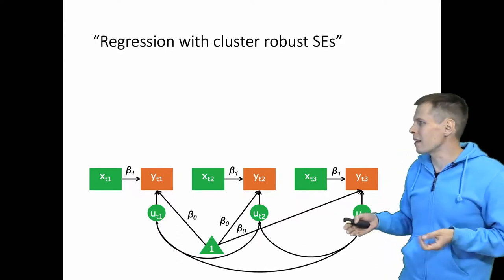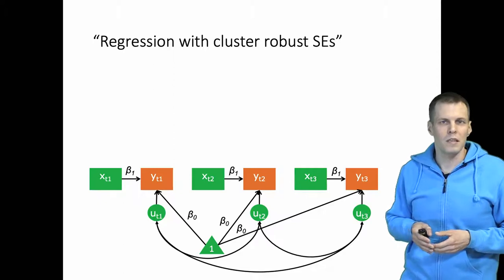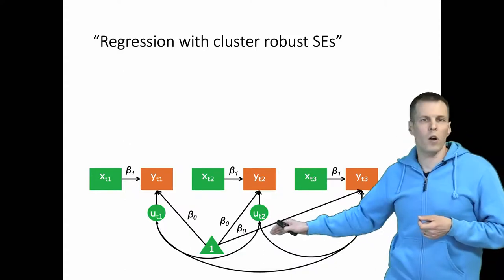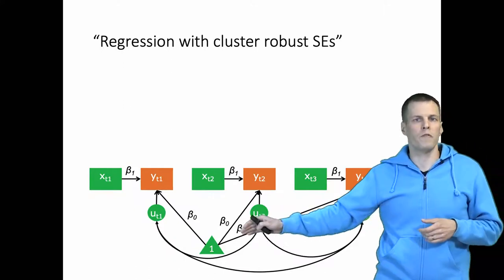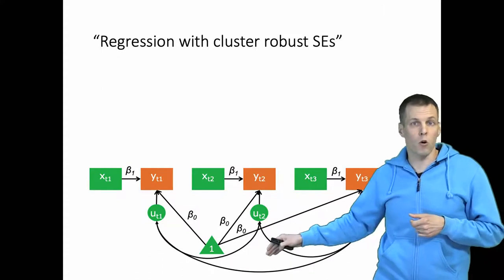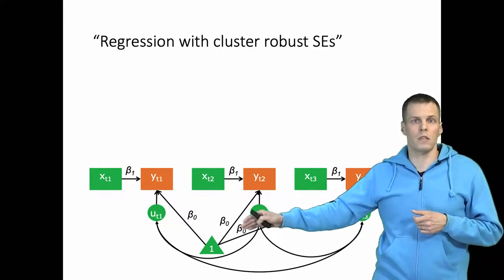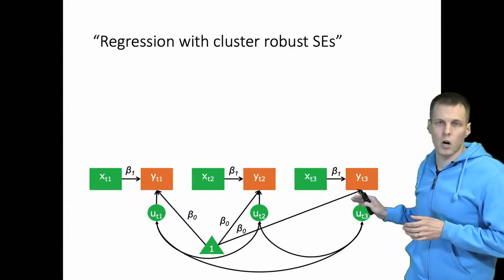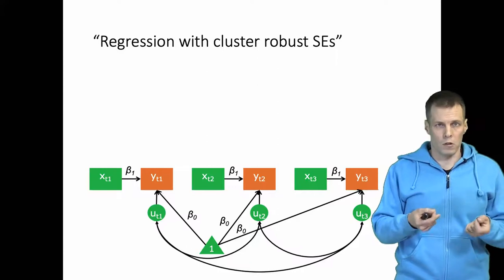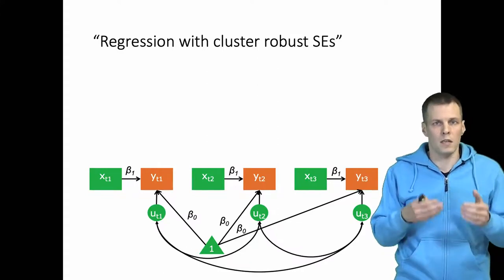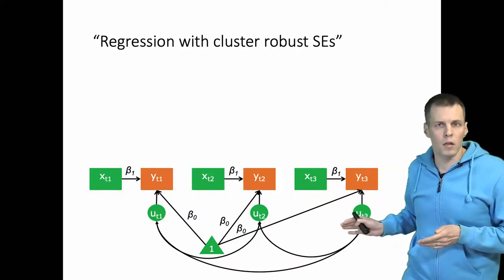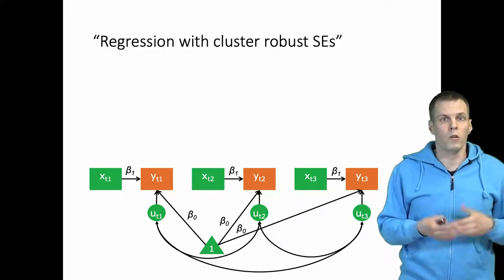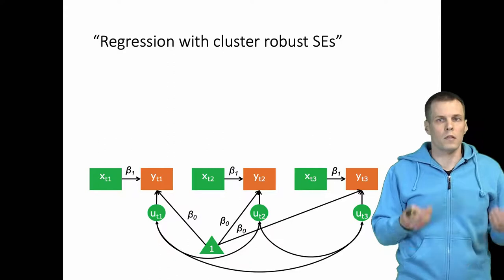We can also do something that resembles cluster robust standard errors. The error terms within a unit — repeated observations within a unit — are allowed to be freely correlated, with no independence constraints. However, this is not exactly the same as cluster robust standard errors for two reasons: the estimates from this model will differ slightly from the pooled cross-sectional analysis, and it does not take into account heteroscedasticity where, for example, variance of ut3 depends on xt3.